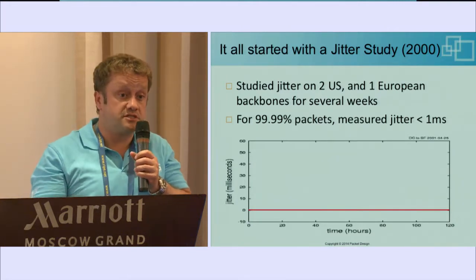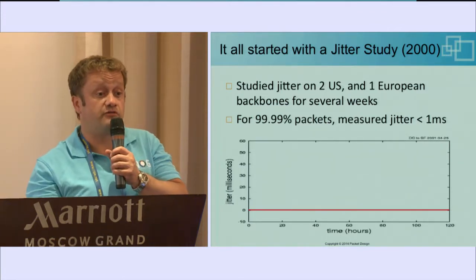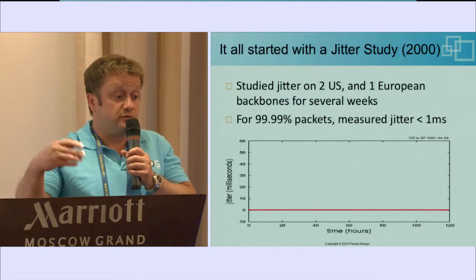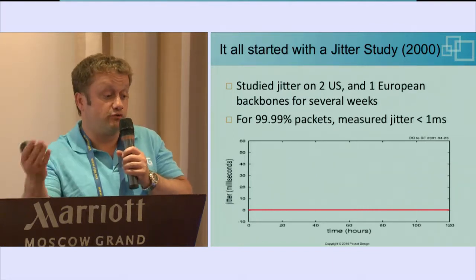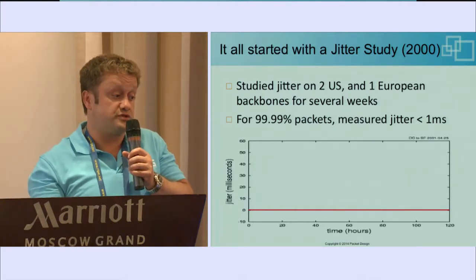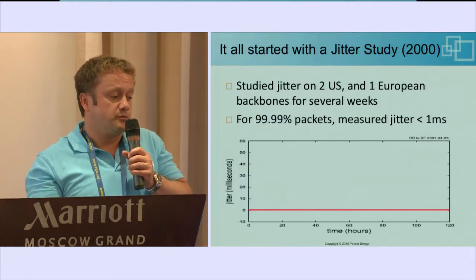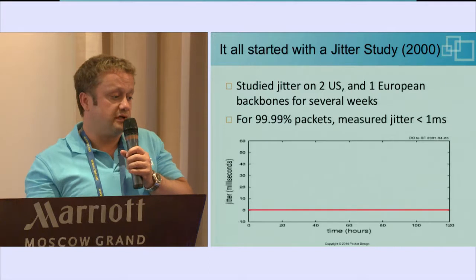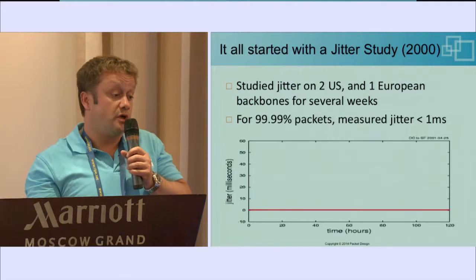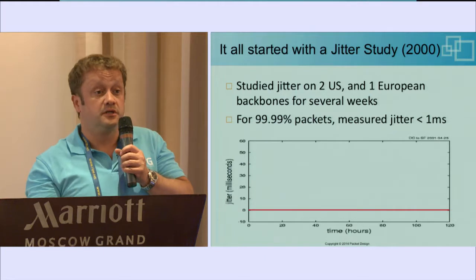That's not to say jitter doesn't exist — it usually exists in the access and aggregation networks where you have over-subscription, many users. Whereas in the core, the network is typically over-provisioned, there's excess bandwidth, and queues usually don't form because you want resilience to link failures. This graph shows jitter in the core of the network across the week — almost four nines, basically no jitter.